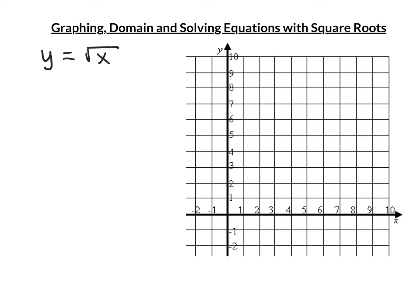Let's take a look at the graph of y equals the square root of x. When I pick values and make a table, what you want to pick for x is perfect squares. The first one we can plug in is 0, because the square root of 0 makes y equal to 0. The next perfect square is 1, because the square root of 1 is 1. Then we can plug in 4 — that's the next perfect square — and the square root of 4 is 2. Then 9: the square root of 9 is 3.